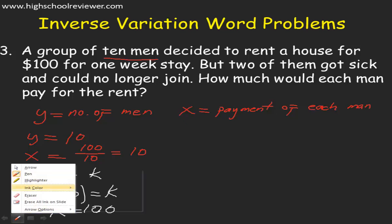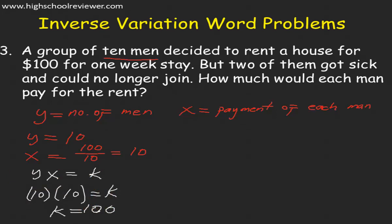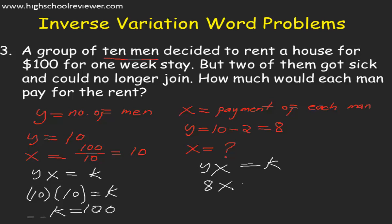We will find the second values of Y and X. Two of them got sick and could no longer join, so our Y here is 10 minus 2, which equals 8. The second value for X — how much would each man pay — is the unknown. Using the equation Y multiplied by X equals K, Y is 8 and K is 100.